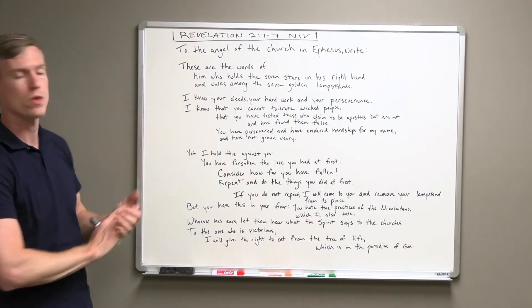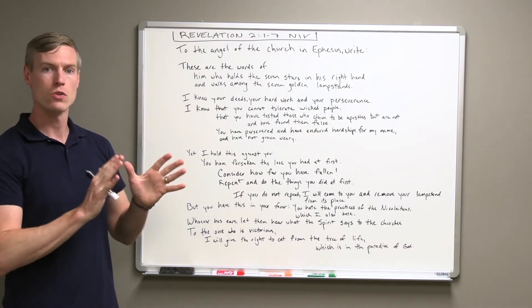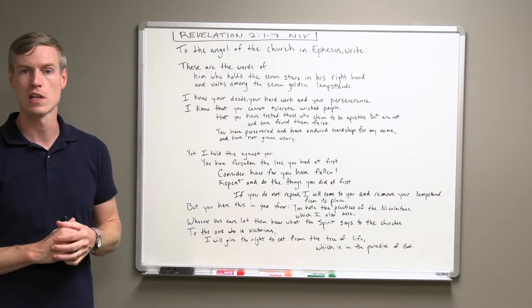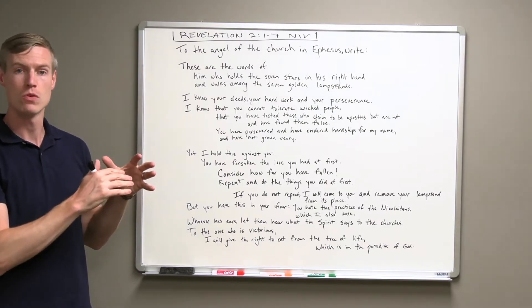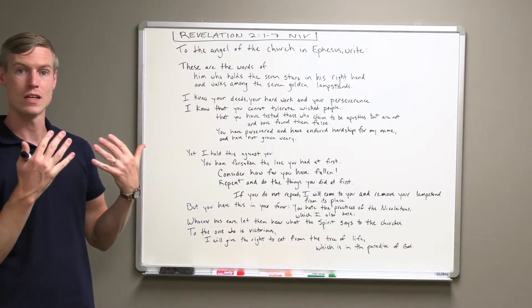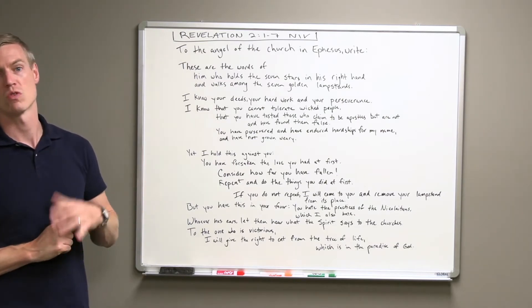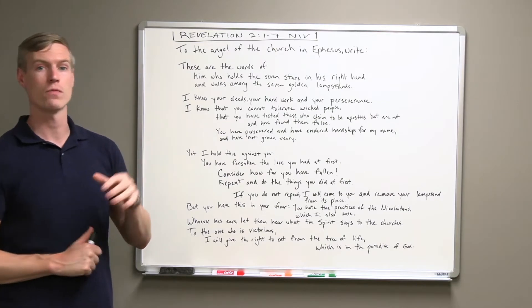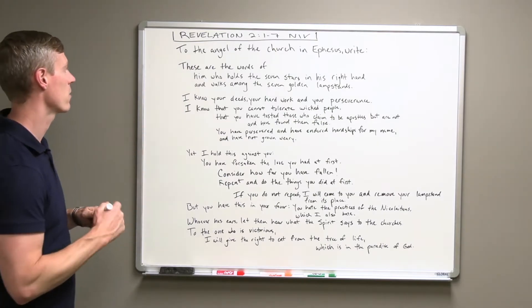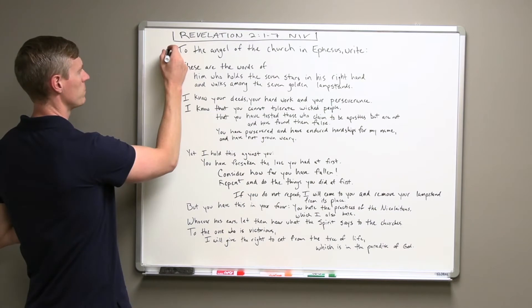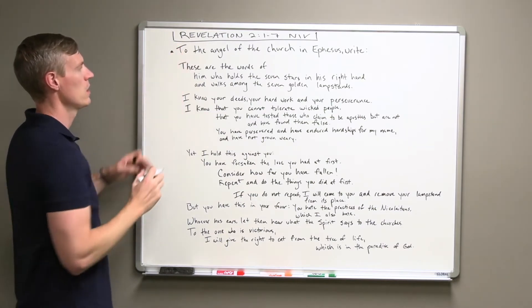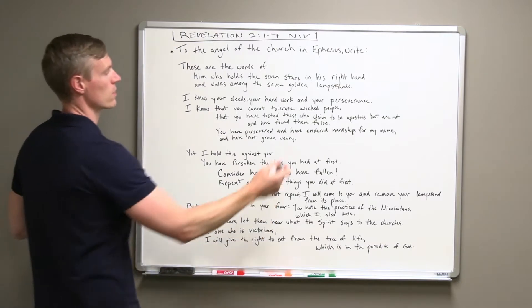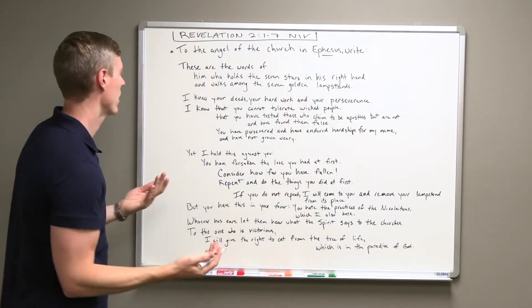I'm going to trust that you have read through the passage, and now I want to show you one way of looking at the structure of these letters. It starts at the very outset with who it's to: the angel of the church in Ephesus. Those are the recipients of this particular letter.